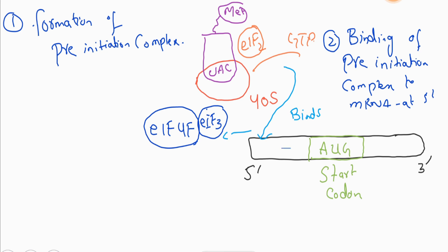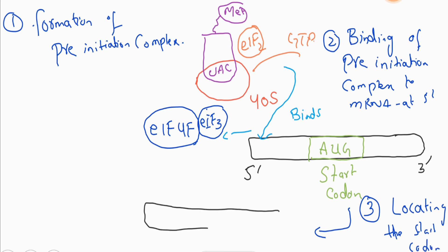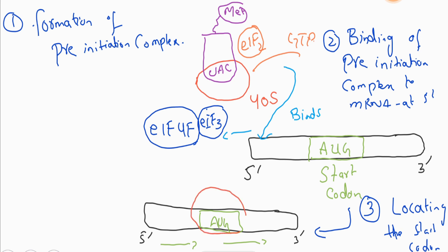After binding the pre-initiation complex to the messenger RNA, the next step is locating the start codon. The complex moves in the 5 prime to 3 prime direction until it locates the start codon. When the initiation complex recognizes the start codon, it places itself on the start codon.